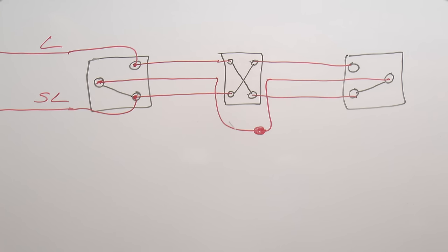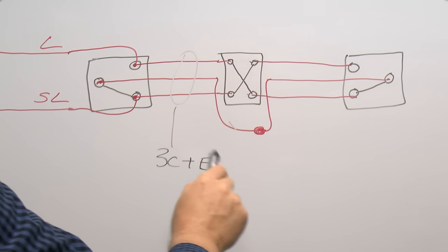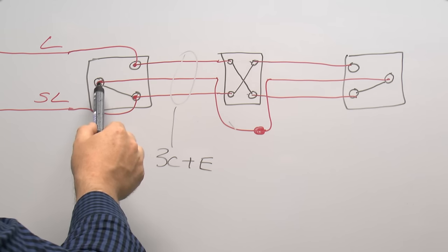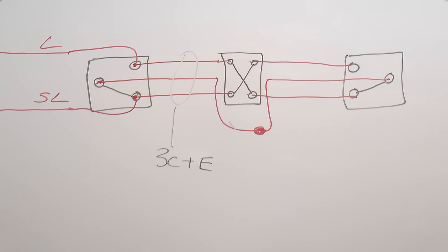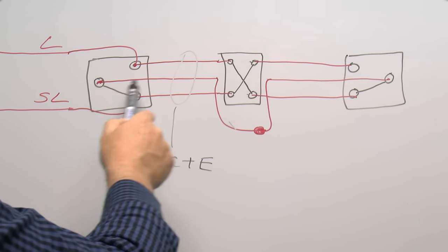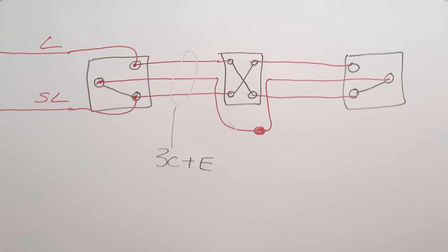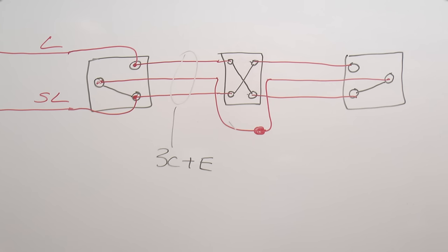This three-core-and-earth method is probably the more common one in houses. You also need to make sure that the common wire here is connected to the common terminal at the end switch, because if it isn't, you'll get all kinds of weird situations — the light works from one place but not from the other, and so on.